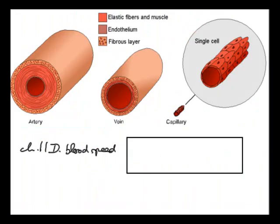This is a problem about blood speed. The blood speed in a normal segment of a horizontal artery is 0.11 meters per second, and an abnormal segment is narrowed down by an arteriosclerotic plaque to one-fourth the normal cross-sectional area. The reason it says horizontal artery is that if it were vertical, the height would figure in and they would need to give a height difference. Since it's horizontal, there's no height difference.